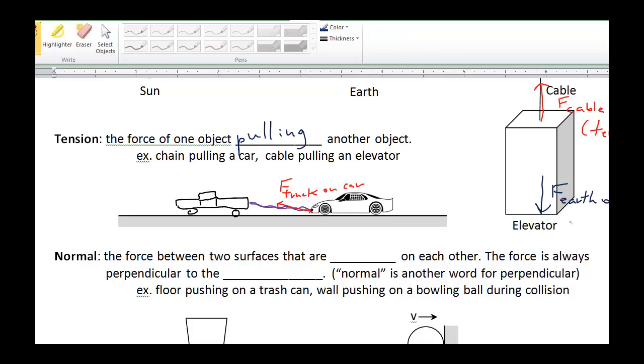The one in red, up here on top, this would be a tension force. It's the force of the cable pulling up. And then, we have the force down here of the Earth pulling down on the elevator, which would be a gravitational force.